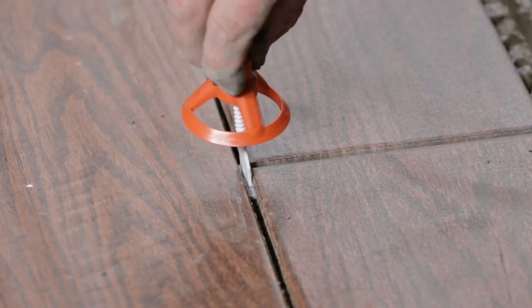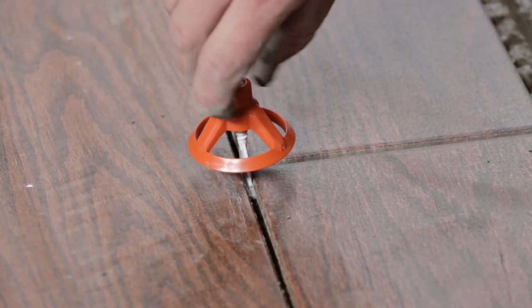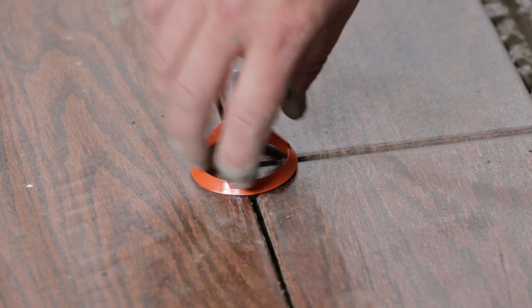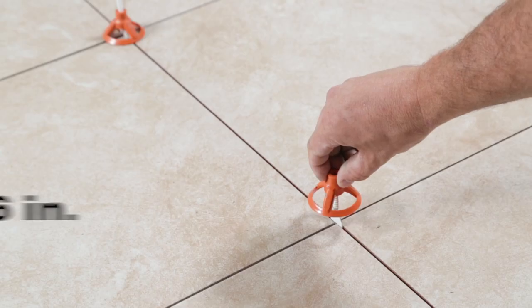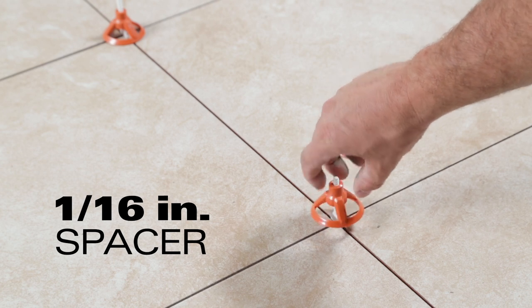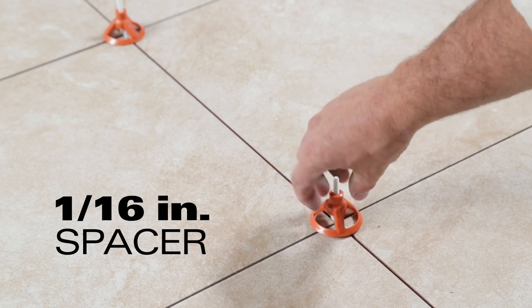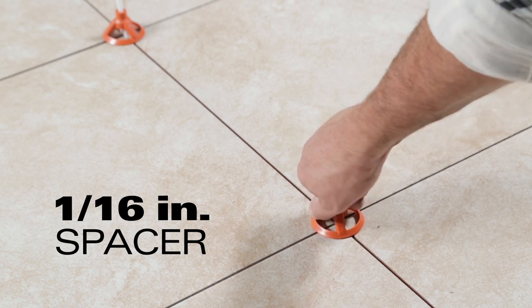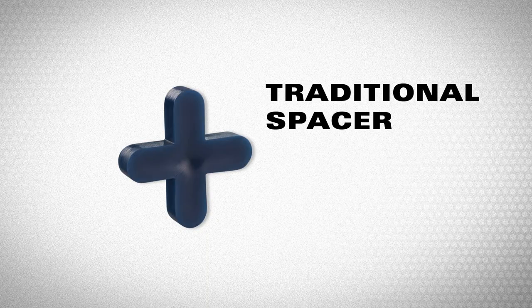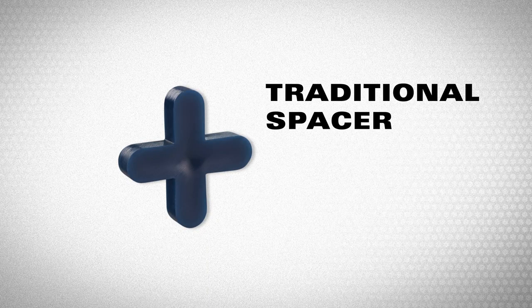Because Rigid LevelMax can grab three to four tiles at once, you'll save time and money over competing systems by using less. LevelMax can double as a 1/16th inch spacer, which can save you more time and money. But if you want thicker grout lines, you can still use traditional spacers.